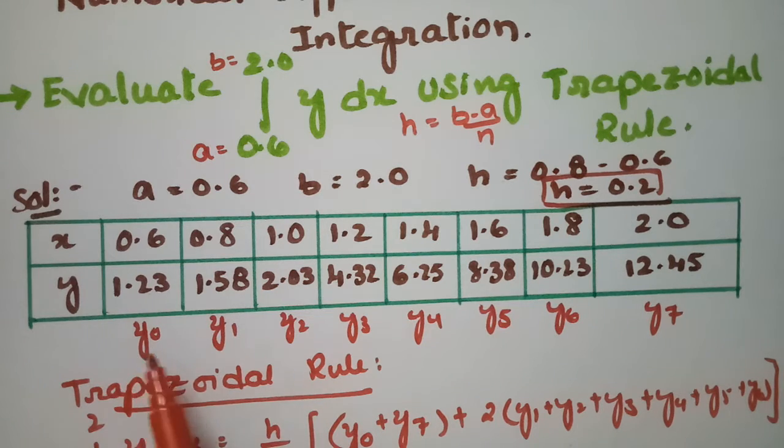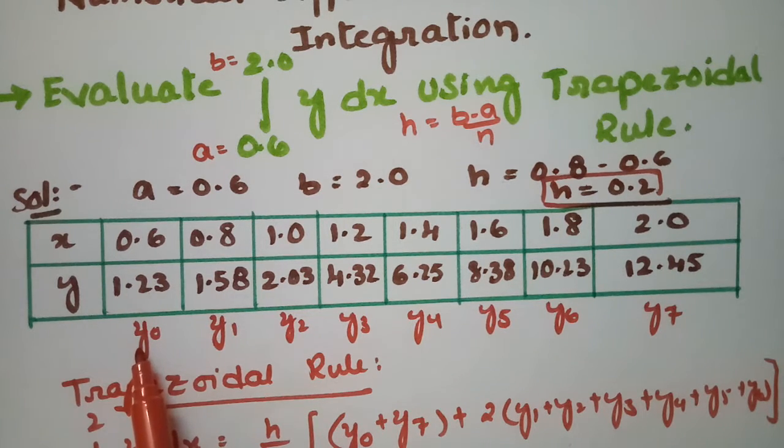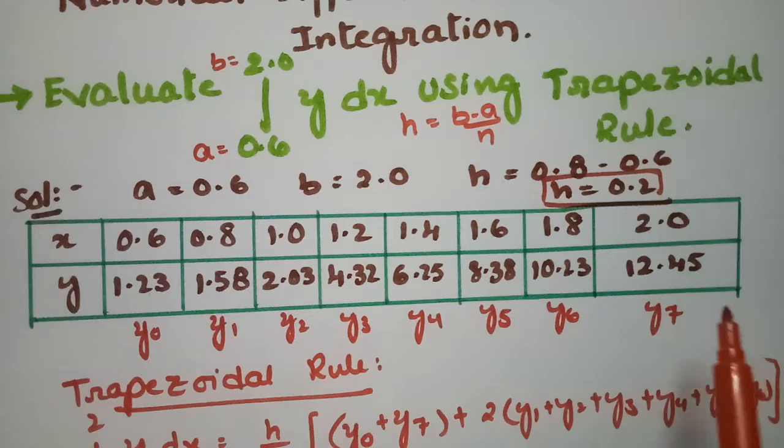After that, we plot all these values, starting with y0. This will be y1, y2, y3, and so on, up to y7.